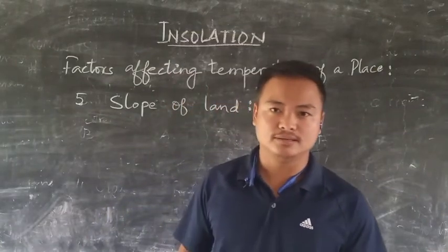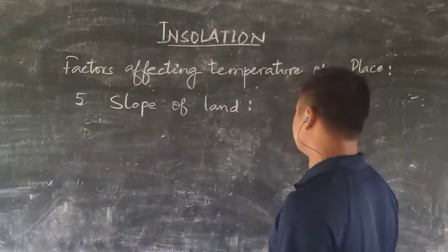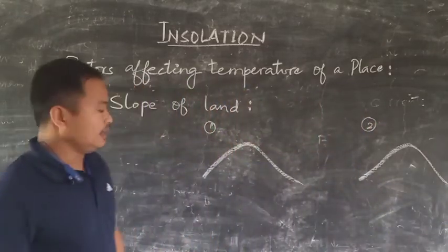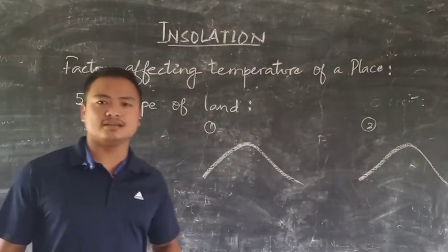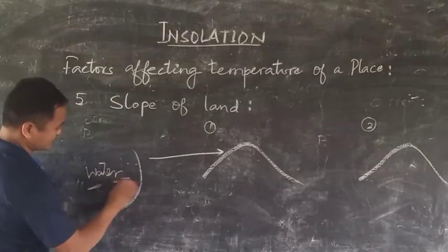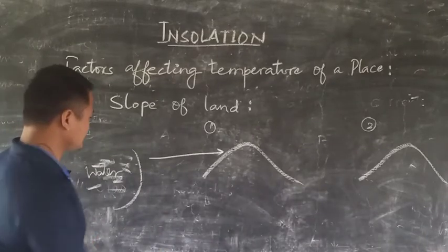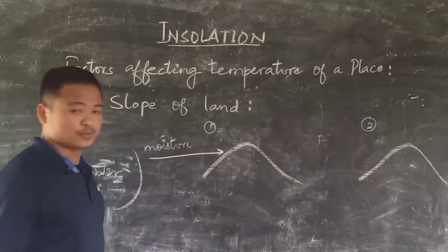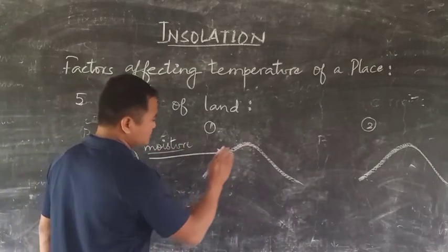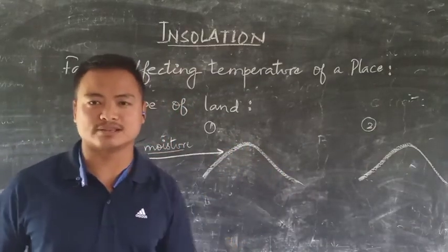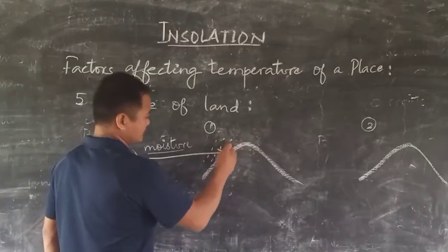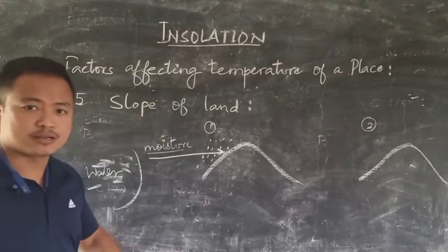The fifth factor is the slope of the land. Consider a mountain acting as a barrier to moist winds. The wind flows from the water bodies carrying moisture with it. When this moist wind is obstructed by land masses — relief features like mountains, plateaus, or any high elevated land surface — it results in rainfall. The side that obstructs the wind is known as the windward side.